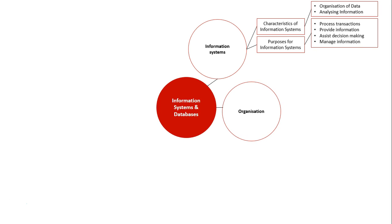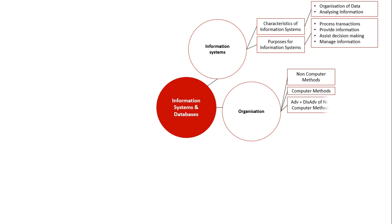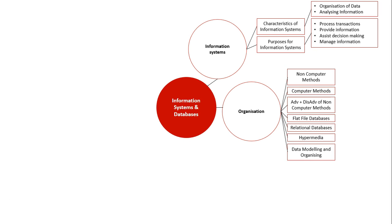We look at organising specifically, as one of the information processes at the core of this unit. We need to look at the traditional non-computer methods as well as computer methods, and the advantages and disadvantages of the non-computer methods. The two main categories of databases we look at are flat file and relational databases, as well as hypermedia and data modelling.